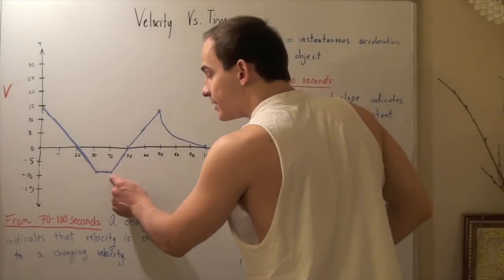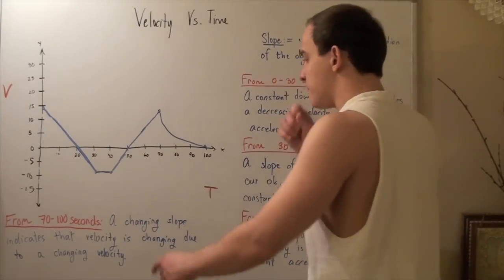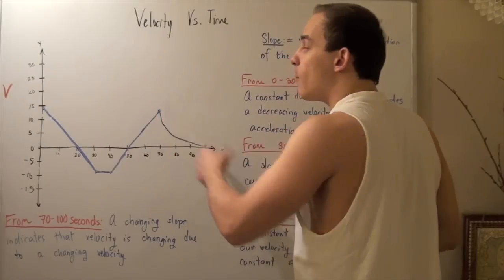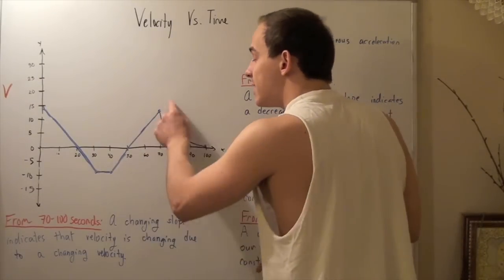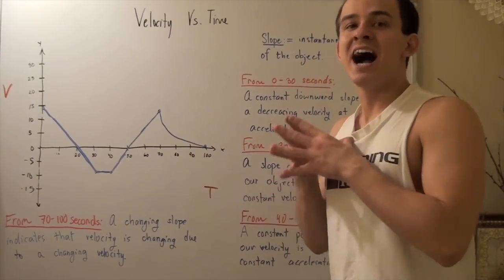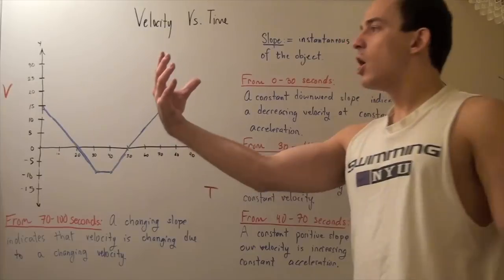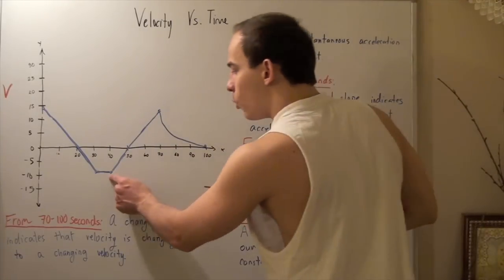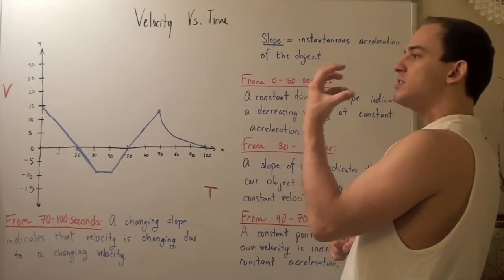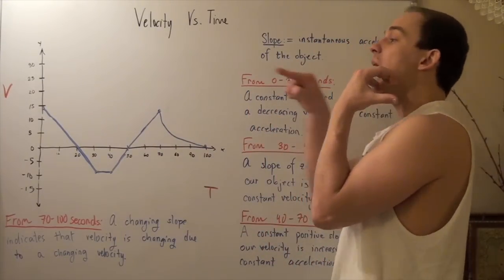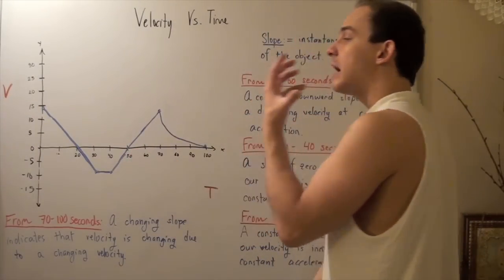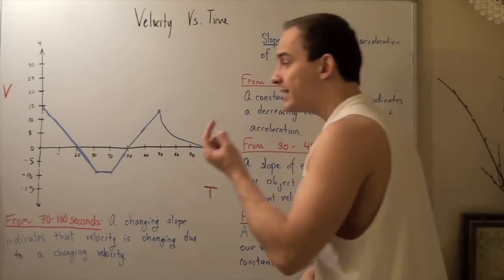At 40 seconds until 70 seconds, our slope is now positive, upward, and constant, meaning our object begins to accelerate at a constant rate. The object is moving in the negative direction but accelerating in the opposite direction, until it reaches time equals 50 seconds where the object stops for a second time — the first stop was at 20 seconds.